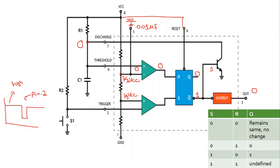At the lower comparator, the trigger pin is initially at high voltage (VCC). Since the negative terminal is at higher potential than the positive terminal, the comparator output S = 0. With both R = 0 and S = 0, the RS flip-flop output remains unchanged. So the output remains zero and Q-bar remains one — this process continues and the output stays at zero as long as a high voltage is applied at pin 2.